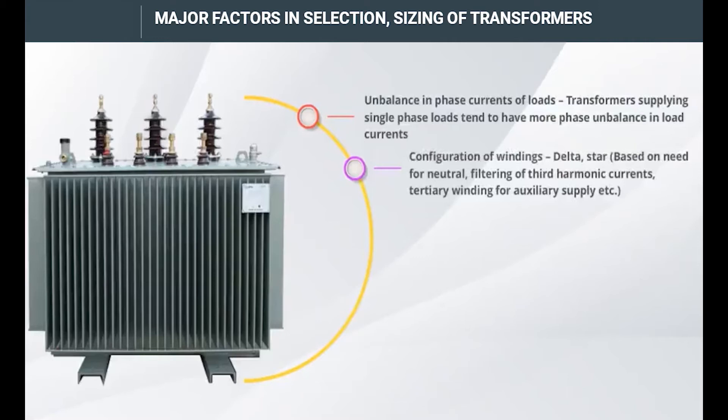Configuration of windings — whether delta or star — needs to be determined. This is based on the need for neutral, filtering of third harmonic currents, a tertiary winding for auxiliary supply, and other requirements.